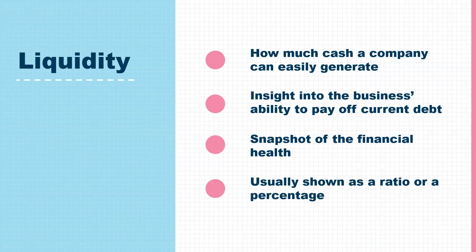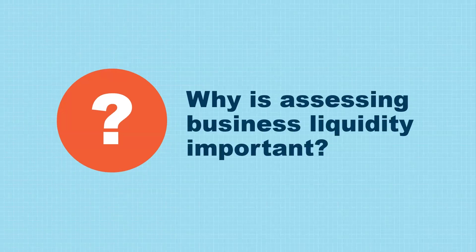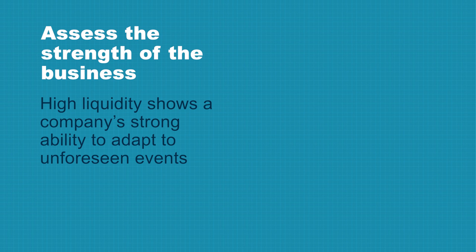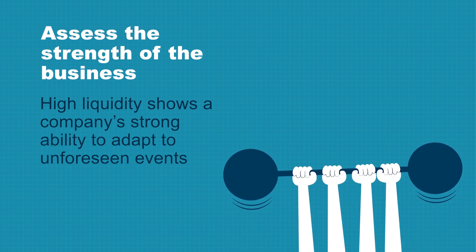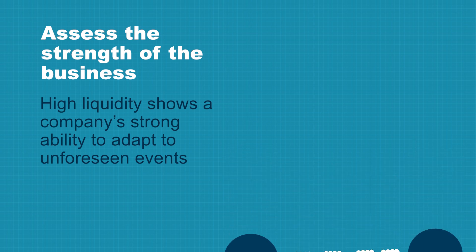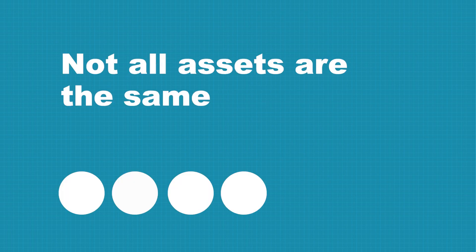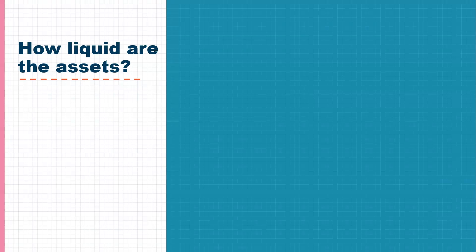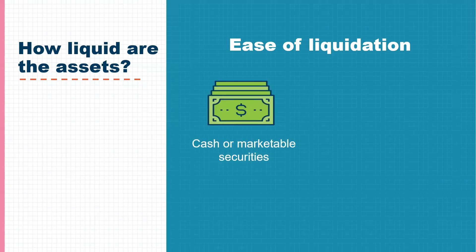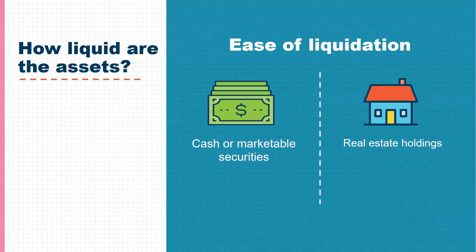Liquidity is usually shown as a ratio or a percentage. Liquidity analysis allows you to gauge a company's ability to adapt. When unforeseen expenses arise, a company with high liquidity will be able to easily cover the costs, while a company with low liquidity may be forced to sell off assets or take on debt. We also need to take into account that not all assets are the same — some assets are more liquid than others. Cash and brokerage accounts would have high liquidity, whereas real estate assets may be harder to liquidate or sell.